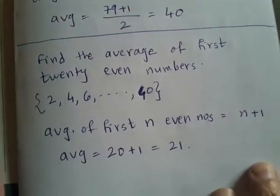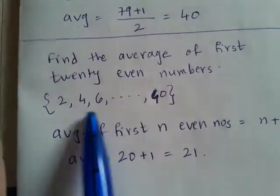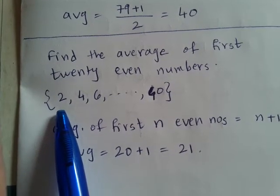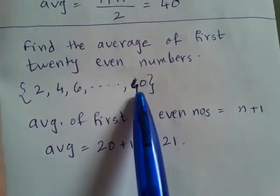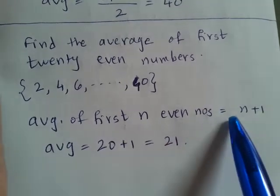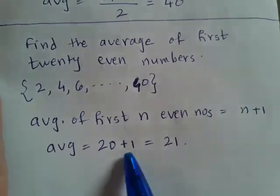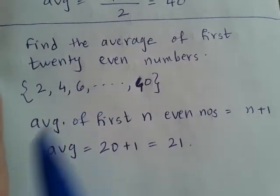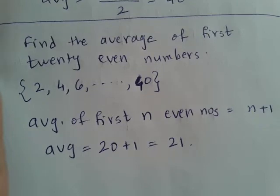Find the average of the first 20 even numbers. We begin with 2 — the first even number is 2, then 4, 6, and these first 20 even numbers go up to 40. There is a straight formula for the average of first n even numbers: that is n plus 1. For first 20 even numbers, 20 plus 1 equals 21. If the question were first 100 even numbers, the answer would be 100 plus 1, that is 101. So easy!